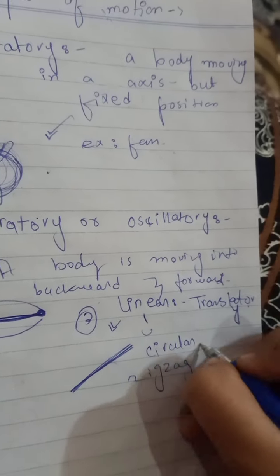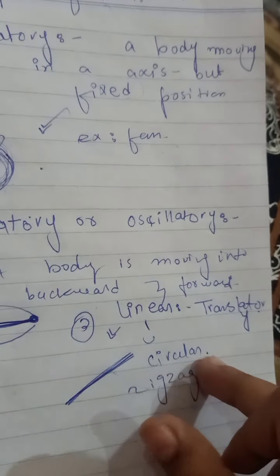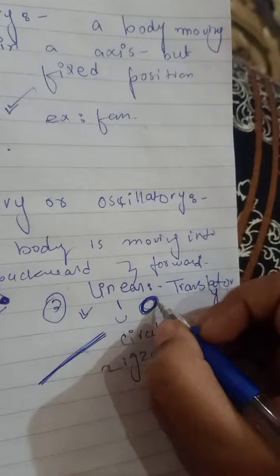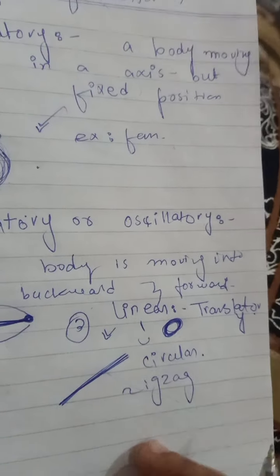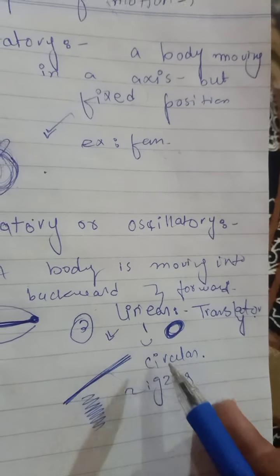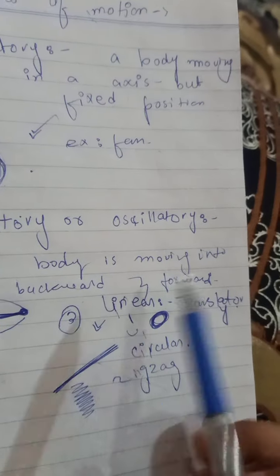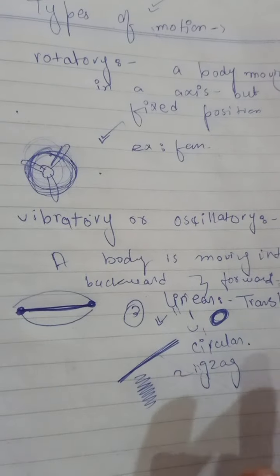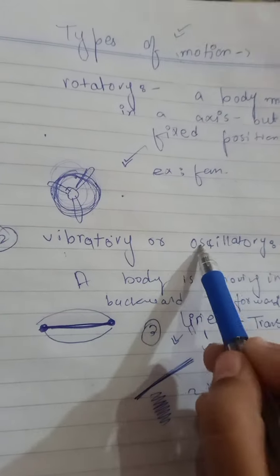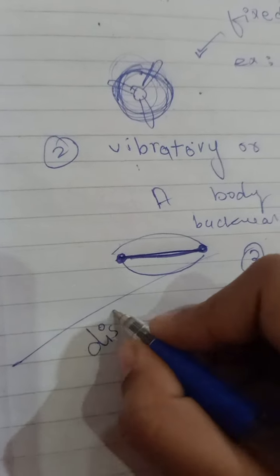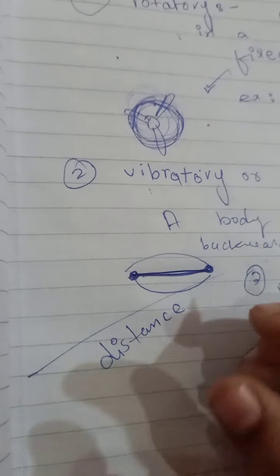Linear motion has two subtypes: the first is circular, and the second is zigzag. Circular means a body is moving in a circular path but linearly, and zigzag means a body is moving in a zigzag path but linearly. So linear or translatory motion has two types: circular and zigzag. Vibratory motion can also be called oscillatory, and the first type is rotatory motion.